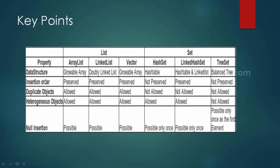Regarding insertion order: in ArrayList, the insertion order is preserved — elements are stored in the same order they are inserted. Similarly for LinkedList and Vector. For HashSet, however, insertion order is not preserved. For LinkedHashSet it is preserved because it uses a linked list as its underlying data structure. For TreeSet, insertion order is not preserved.